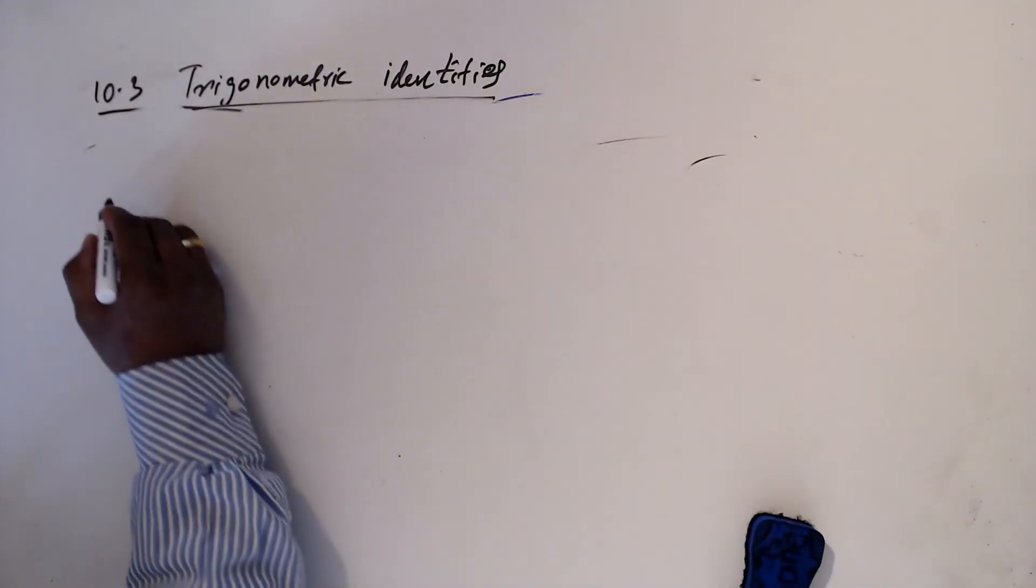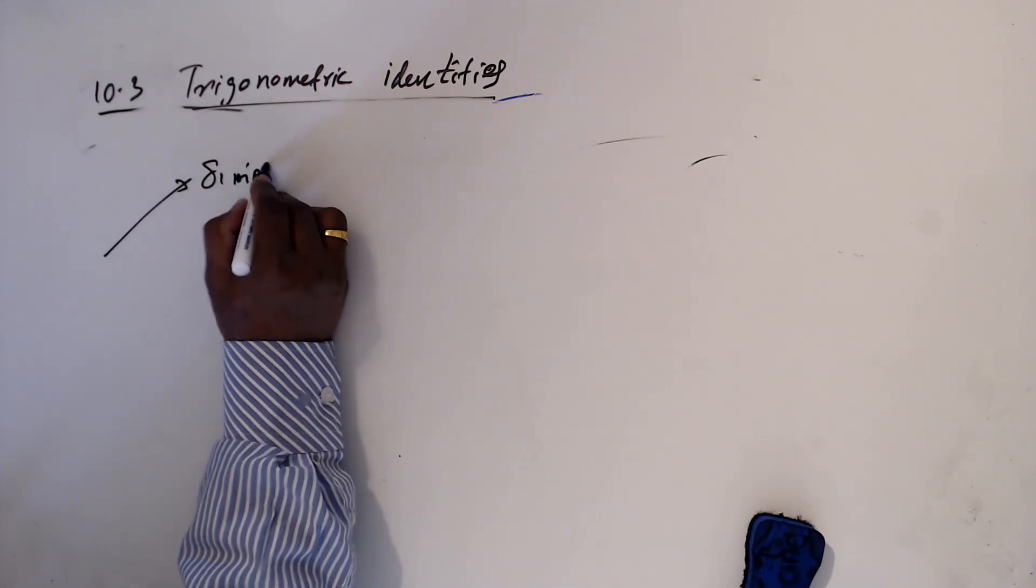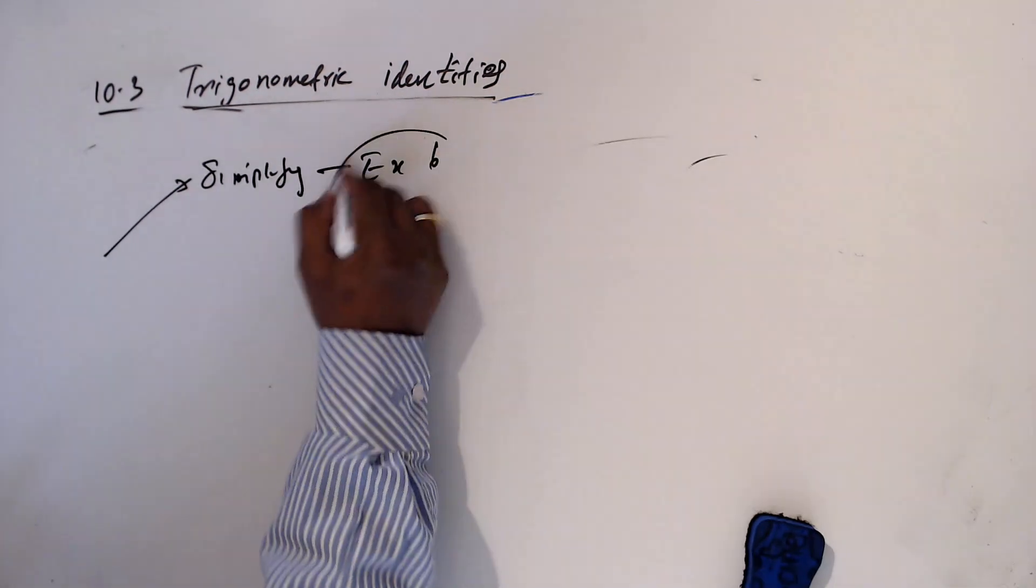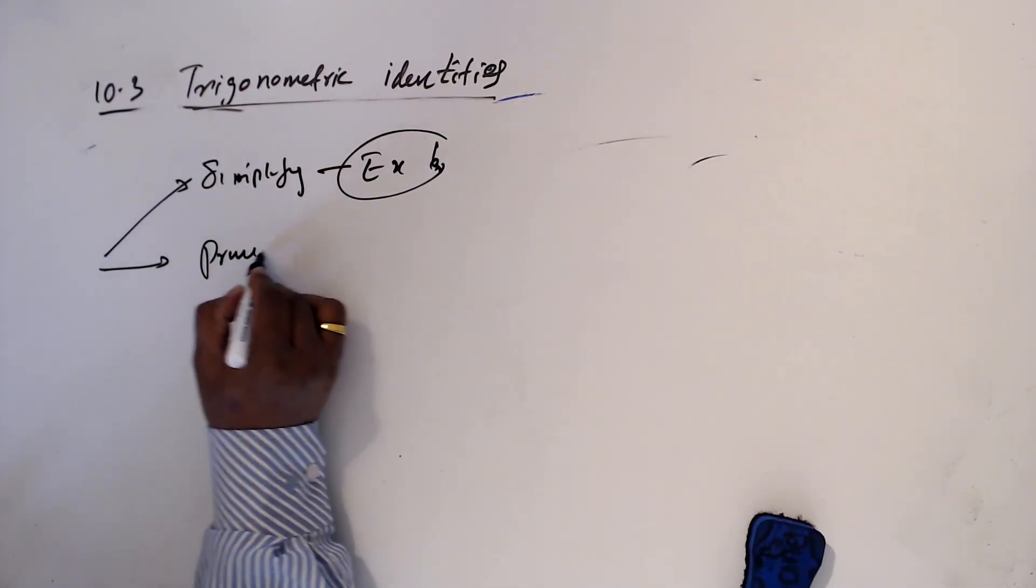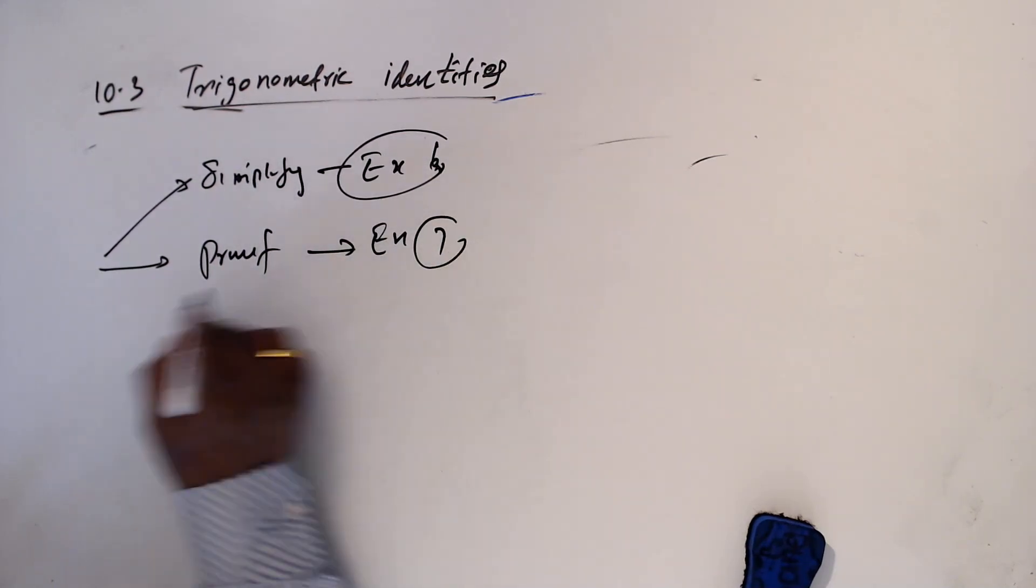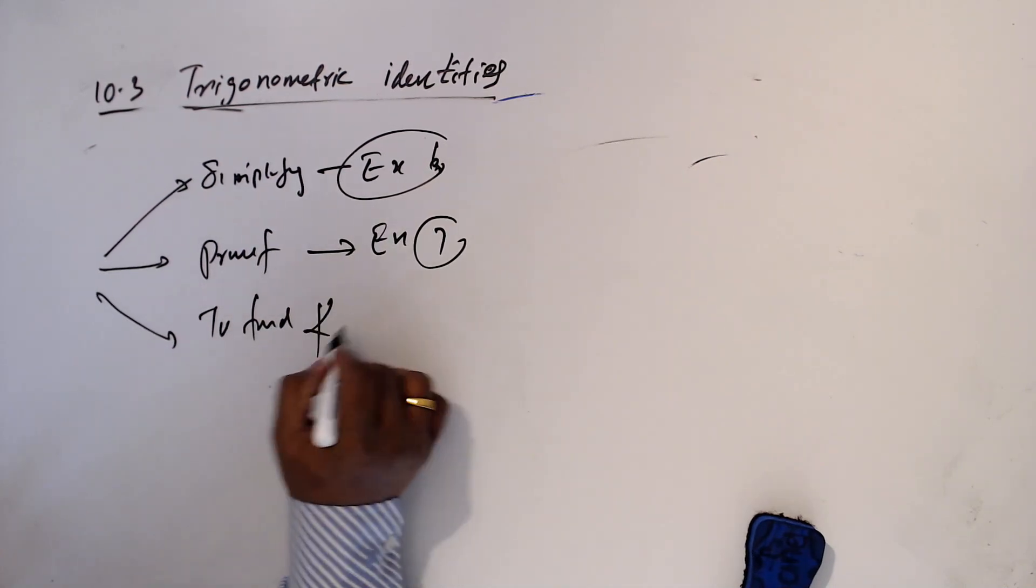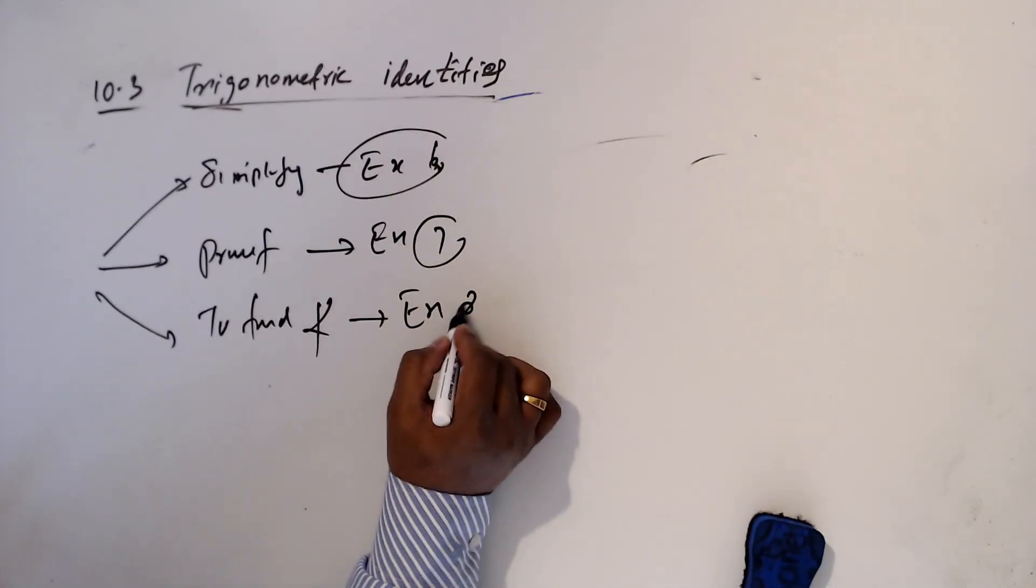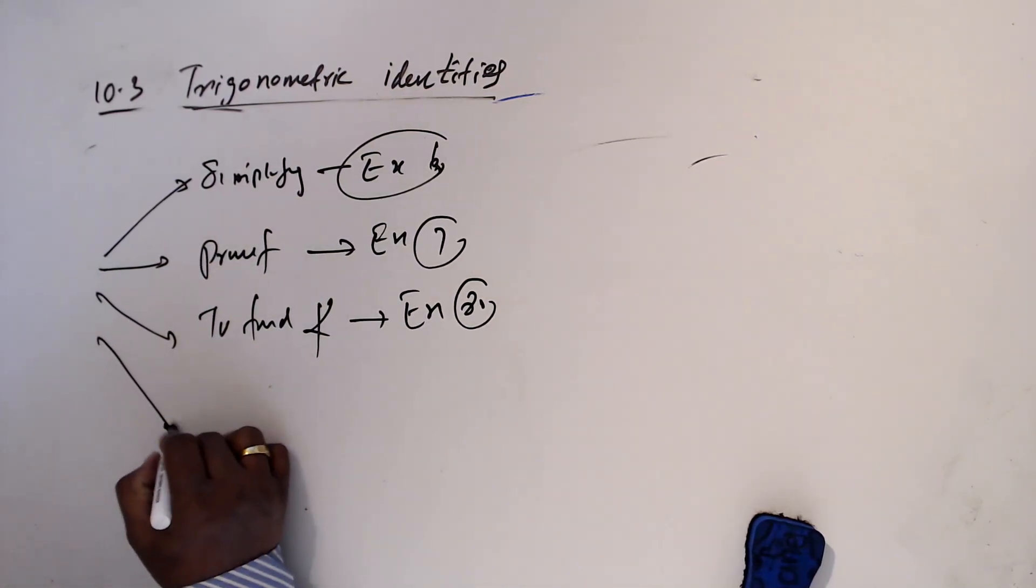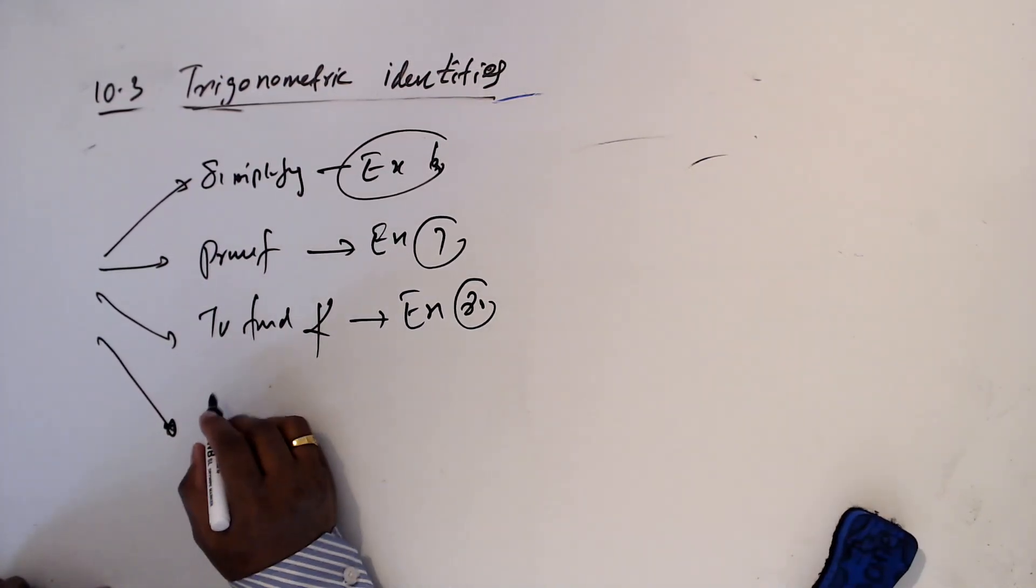So identity we use to simplify. Example number 6 you can see, then prove. Proof. Example number 7 to find angles. Example number 8, and like this, example 9 if you look at.